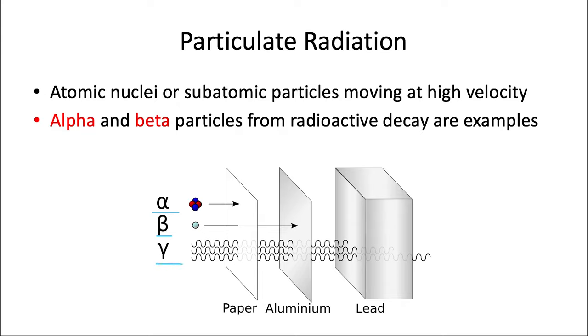Beta particles referred to electrons or positrons. They're stopped by plywood or a thin sheet of aluminum. This image also shows gamma rays, which are a form of electromagnetic radiation that we just talked about, and they're very high energy and require shielding by a dense material such as lead or concrete to stop them.